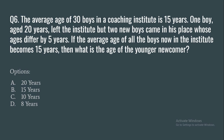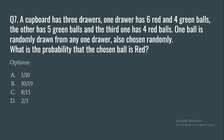Question 6: The average age of 30 boys in a coaching institute is 15 years. One boy aged 20 years left the institute, but two new boys came in his place whose ages differ by 5 years. If the average age of all the boys now becomes 15 years, what is the age of the younger new boy? Options: 20, 15, 10, or 8 years.